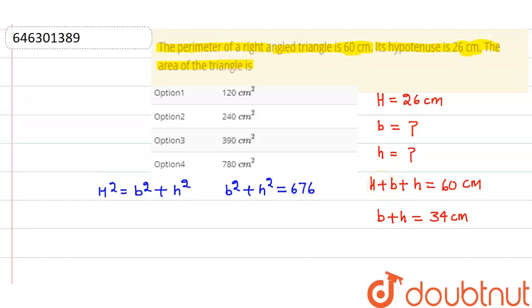Now, we know one thing. Basically, we need to find the area of the right angle triangle and we know that the area of the right angle triangle is 1 by 2, b into h. So basically, we need to find the value of b into h. How can we find this?